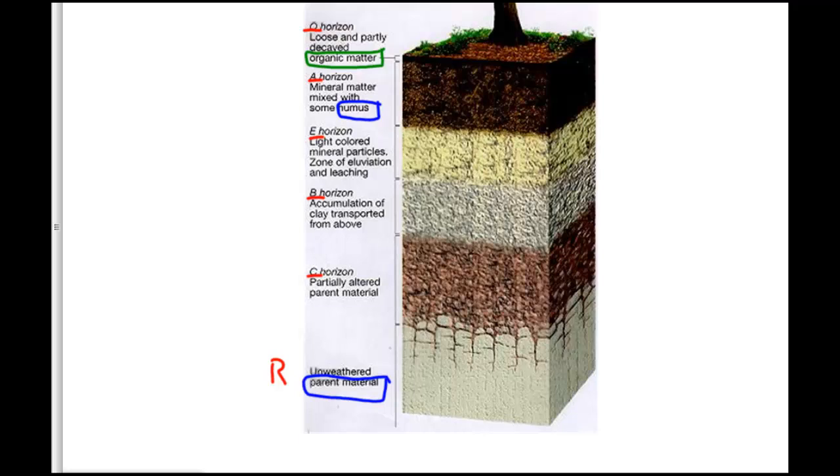and see if we can outline and identify the horizons present in our particular soils. Typically speaking, the O horizon is a horizon found on top of the soil characterized by a lot of organic matter. Right now it's fall. If we went out to our woodland, we would see lots of leaves on top of the ground. That leaf layer is the O layer.